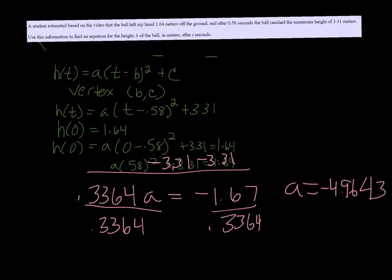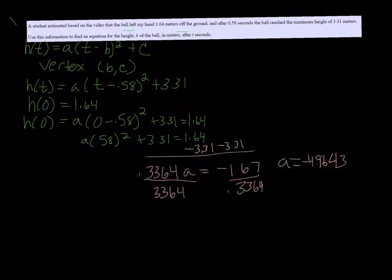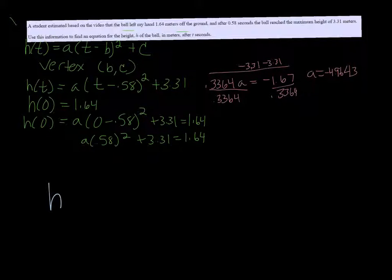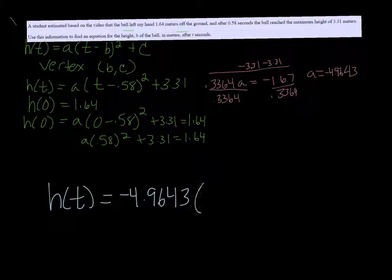Putting that all together, we can finally make an equation. So h(t) equals negative 4.9643 times (t minus 0.58) squared plus 3.31.